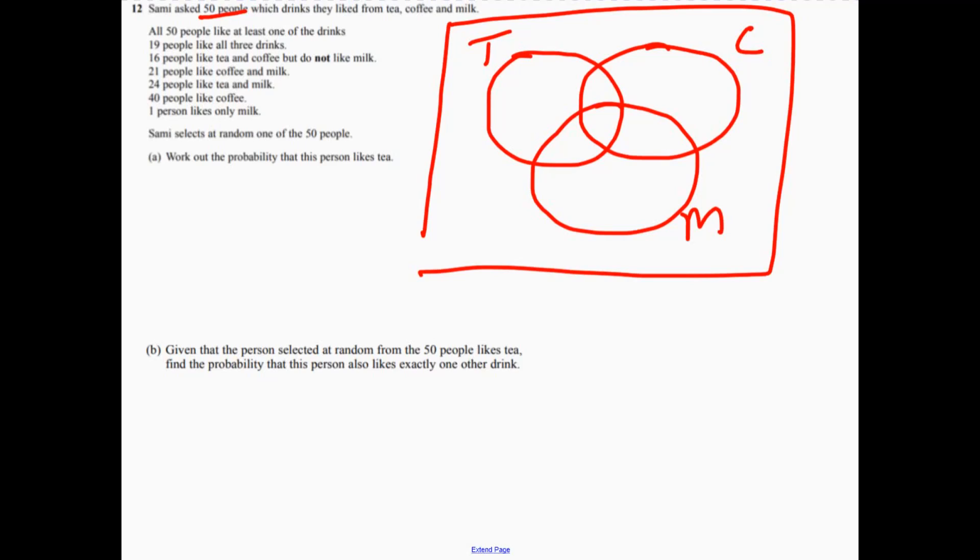Now, the trick when you're filling this in is knowing where to start from. It says that 19 people like all three drinks, so let's put 19 right in the centre. And then 16 people like tea and coffee but not milk. So that goes just there. Sometimes it's a good idea just to tick these ones off as you go.